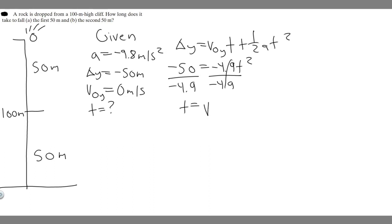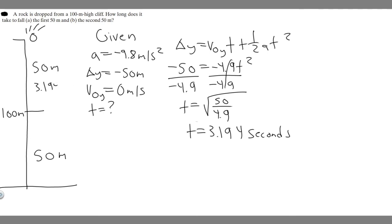We get t-squared equals 50 over 4.9. Taking the square root of both sides, t equals the square root of 50 over 4.9, which equals approximately 3.194 seconds. This is the amount of time it takes to fall the first 50 meters — that's your answer to part (a).